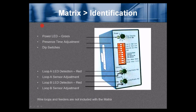Matrix identification: the power LED is green and will be on indicating power presence. There is a time adjustment, dip switches, Loop A detection red LED, Loop A sensor adjustment, Loop B detection LED, Loop B sensor adjustment. Wire loops and feeders are not included with the Matrix — you'll have to supply your own loop cable and feeder cable.